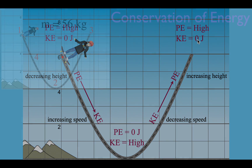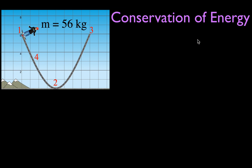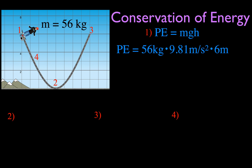Now let's do a calculation. We can calculate the kinetic and potential energy at four points. We know the mass and the height, so we can calculate the potential energy: PE equals mass times g times h. The mass is 56 kg, g is 9.81 meters per second squared, and the height is basically 6 meters. That gives us 3,300 joules of potential energy.